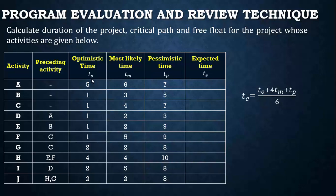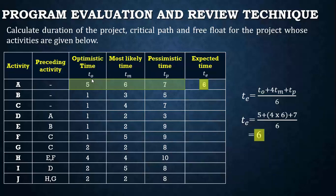First, let us find the expected time for individual activities using the formula. For the first activity, A, the optimistic time is 5, most likely time is 6, and pessimistic time is 7. Using this formula, the expected time duration works out to 6. Likewise, we can do the same calculation to find the expected time for each and every activity in the project.